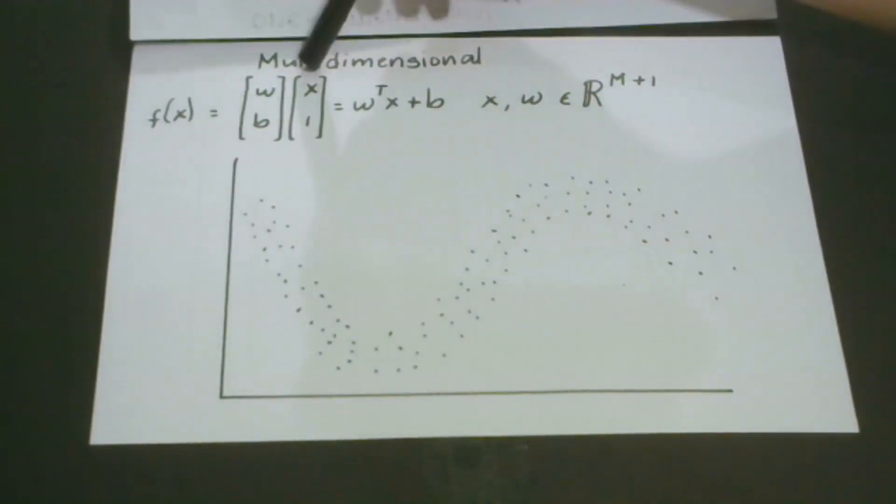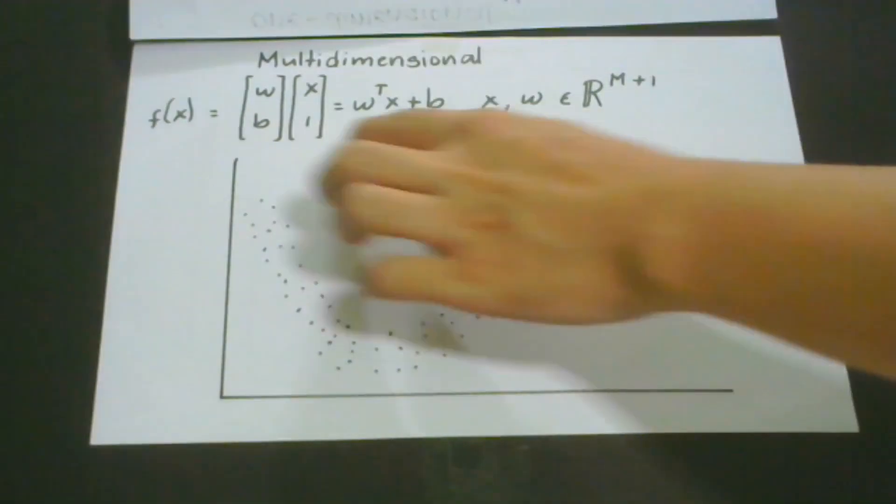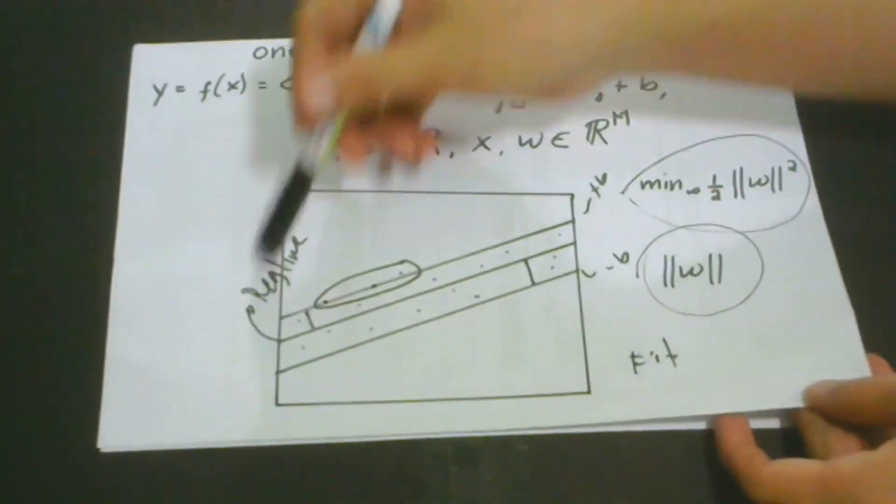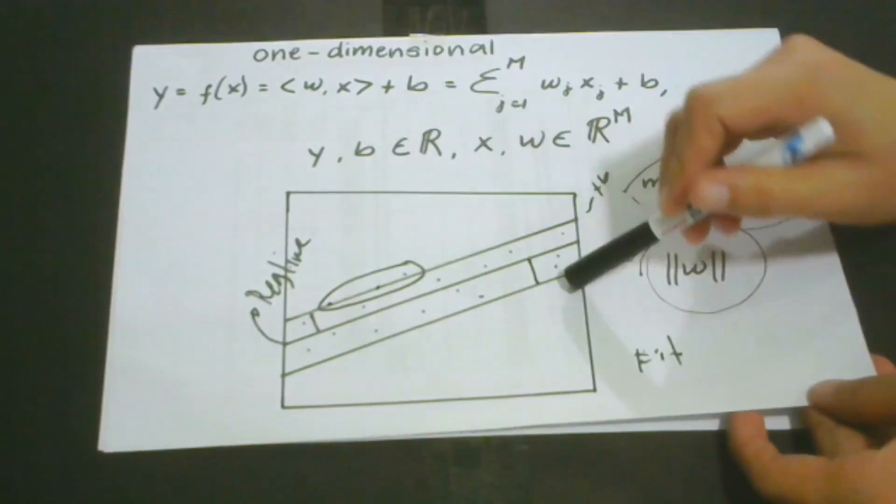Using this gives us a multivariate regression. When we do the process, this becomes W transpose x plus b. The same situation we discussed applies to the upper and lower hyperplanes.